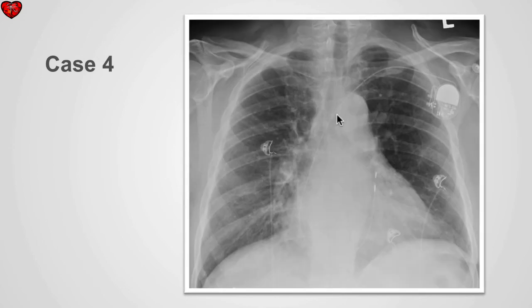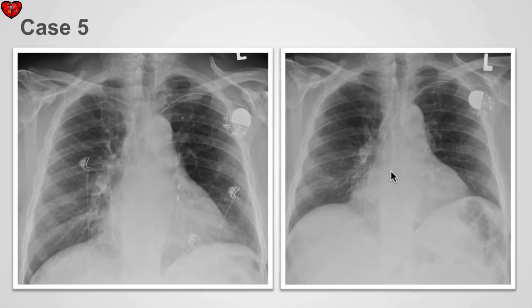In this case, if we follow this pacer lead, we can see the lead traversing through the atrium into the ventricle and then superiorly into the pulmonary outflow tract. This pacer needs to be repositioned. Following repositioning, we can identify the pacer lead tip now lying in good position within the apex of the right ventricle.